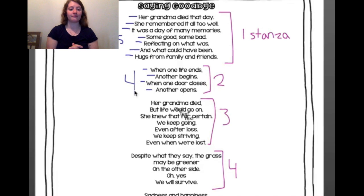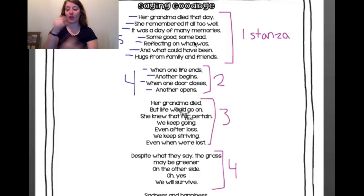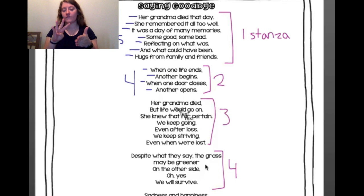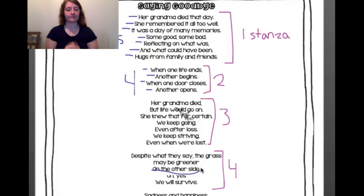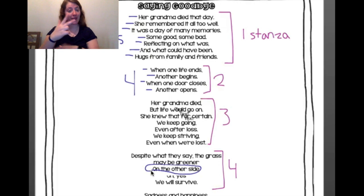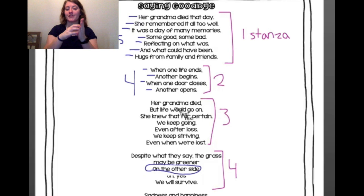So if I were to say go to the fourth stanza and the third line, you would say okay — this is stanza one, two, three, four. So I'm at the fourth stanza. And if I'm going to the third line: one, two, three — I am able to see that this is the third line of the fourth stanza. And that is what stanzas and lines are.